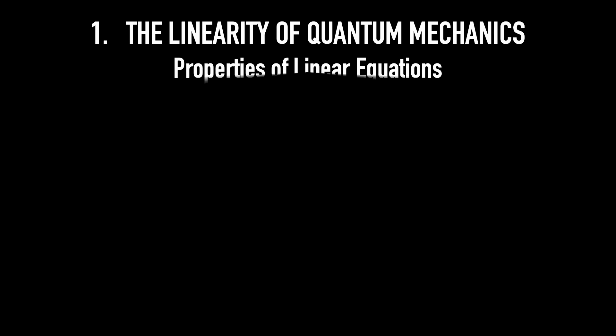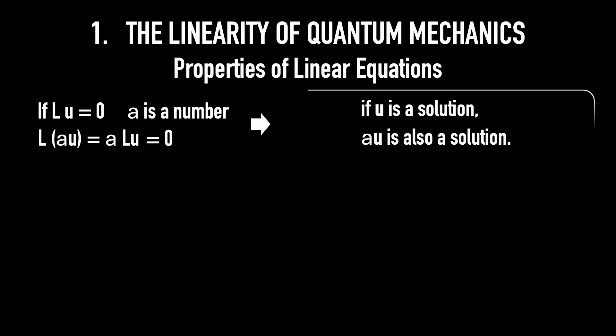Properties of linear equations. Here are the key properties. If L of U equals 0, and A is a number, L of A times U equals A times L of U, which equals 0. Meaning, if U is a solution, then A times U is also a solution.